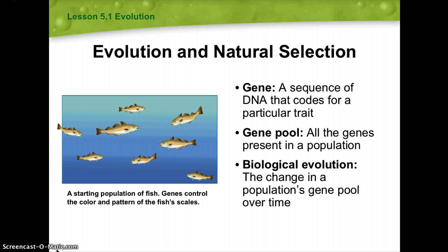To understand evolution and natural selection, we need to look at genetics. A gene is a sequence of DNA that codes for a particular trait. There are about 35,000 genes in the human genome, and those genes make us unique from all other organisms. The gene pool refers to all the genes present within a population. Biological evolution is the change in a population's gene pool over time. When new genes arise, you start to see changes in characteristics.